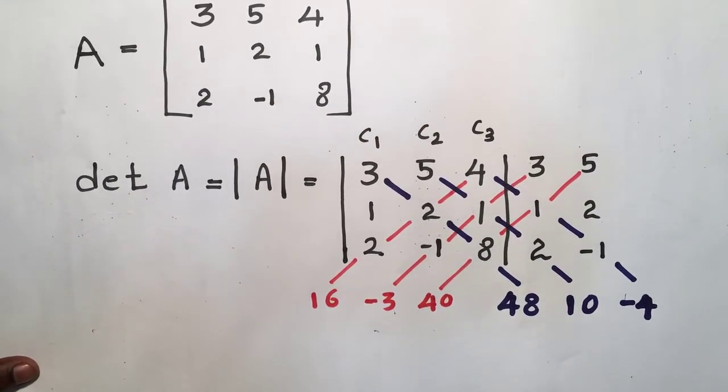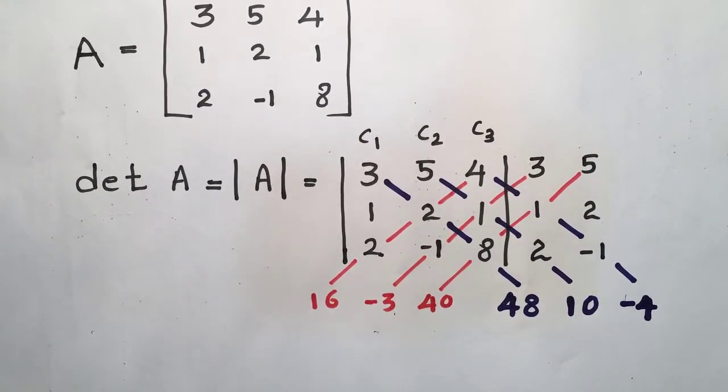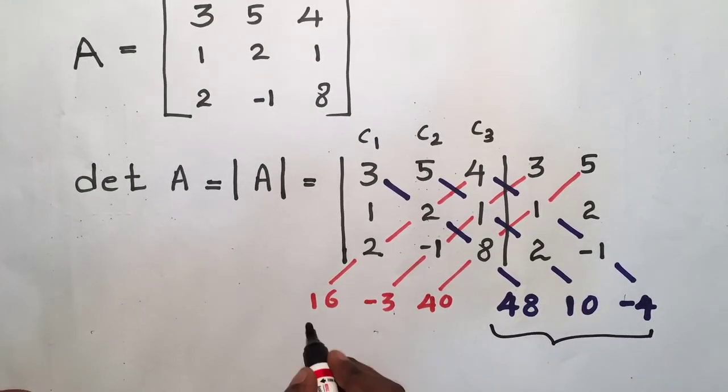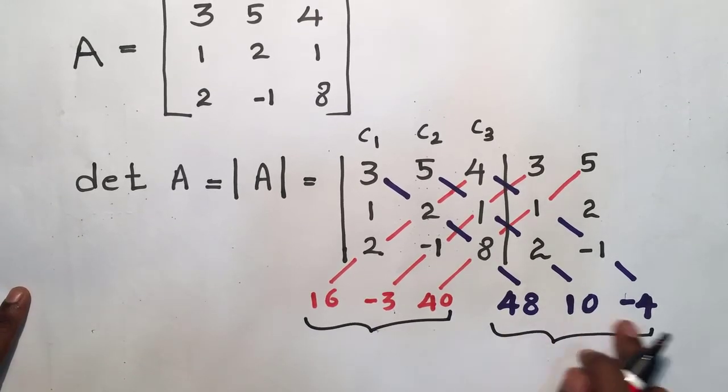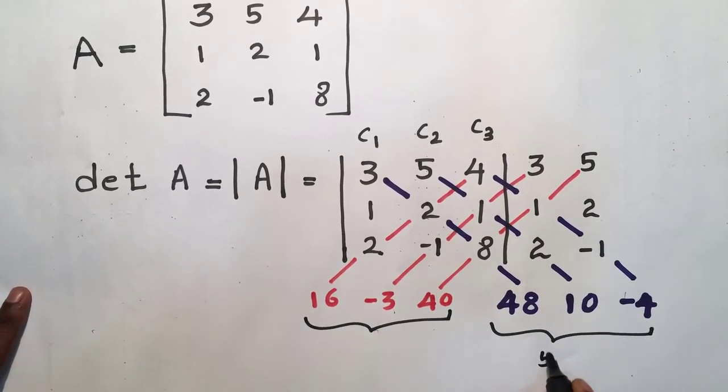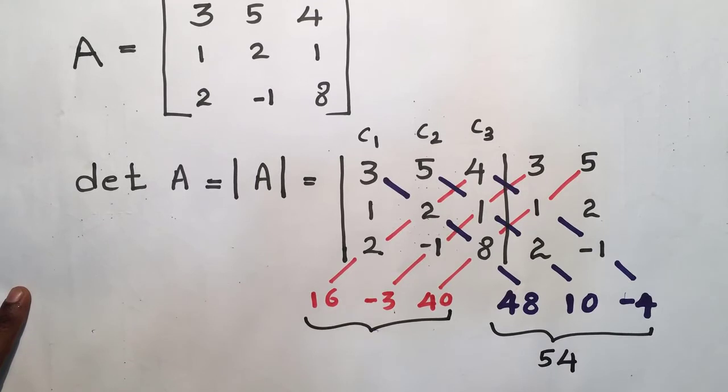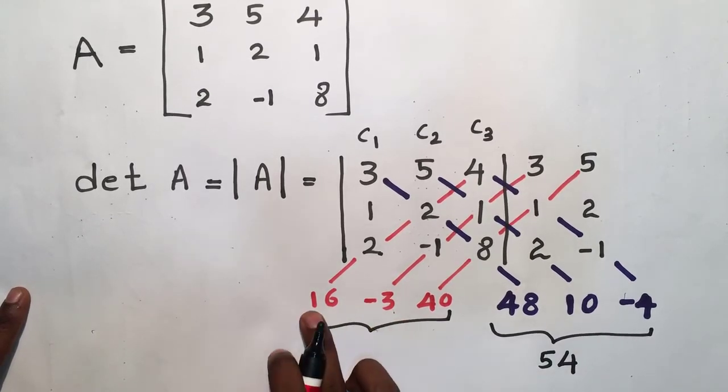I am going to add those different color values. The sum of the blue color numbers is 54, and the sum of the red color numbers is 53.